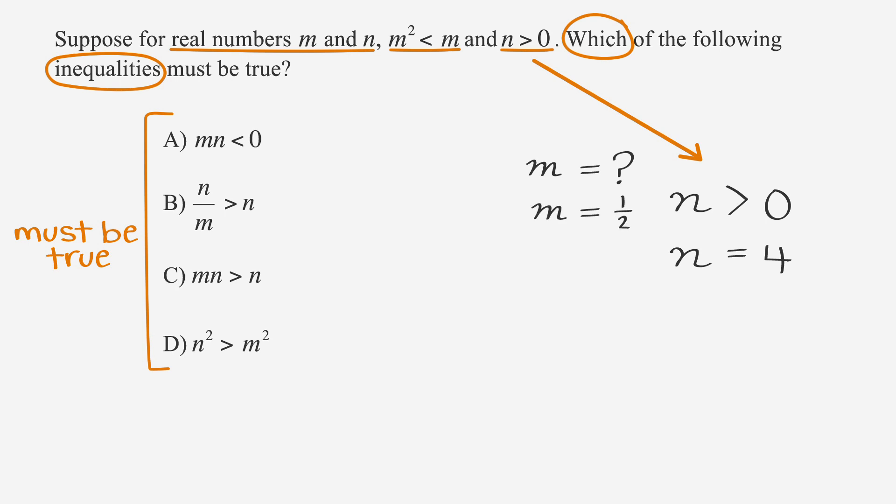So let's test one half. And if m is one half, then m² is one half times one half, which equals one fourth, which is indeed less than one half, or m. So we have n equals four and m equals one half.